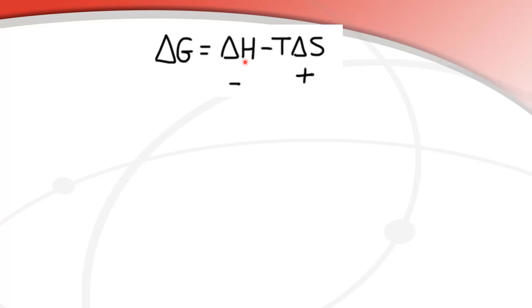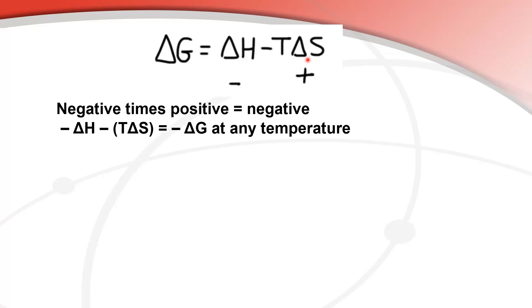In this equation the sign for ΔH is negative and the sign for ΔS is positive, so it's an exothermic reaction with an increase in entropy. When ΔS is positive we have a negative times a positive, which equals a negative for the product T times ΔS. So we have a negative ΔH minus a negative product, giving us a negative ΔG regardless of the temperature — spontaneous at any temperature.